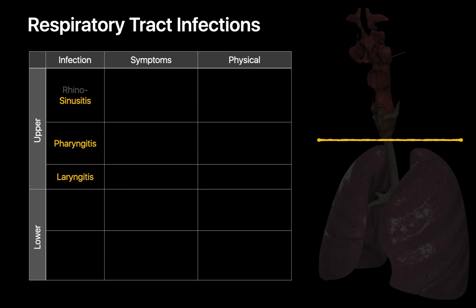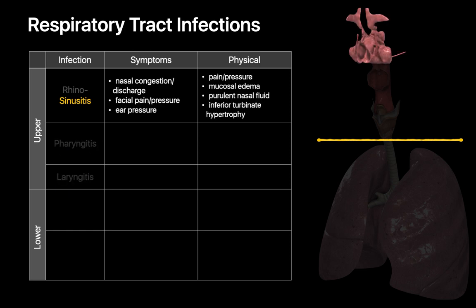Sinusitis, pharyngitis, and laryngitis are common upper respiratory tract infections. Typical symptoms of sinusitis include nasal congestion, nasal discharge, facial pain and pressure, and ear pressure. On physical exam, patients with sinusitis may exhibit pain and tenderness on palpation over the involved sinuses, in addition to the presence of purulent nasal fluid, mucosal edema, and inferior turbinate hypertrophy on otoscope exam.